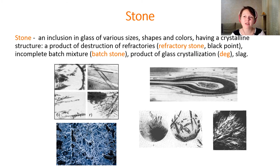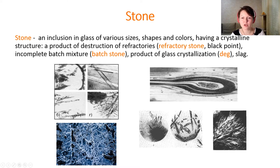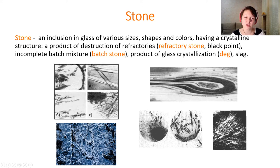Another glass defect is a stone — an inclusion in glass of various sizes, shapes, and colors that has a crystalline structure. It can be a product of destruction of refractories (refractory stones), incomplete batch mixture gives us batch stones, and a product of glass crystallization gives us devitrification, as you can see in the images.